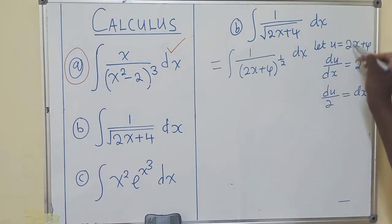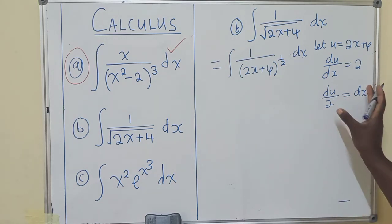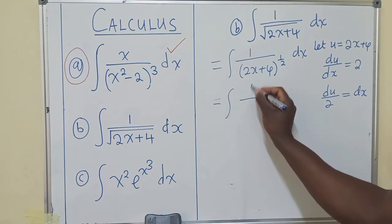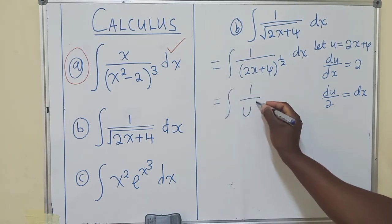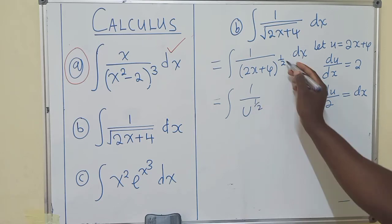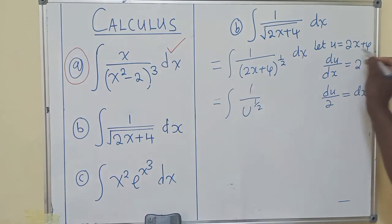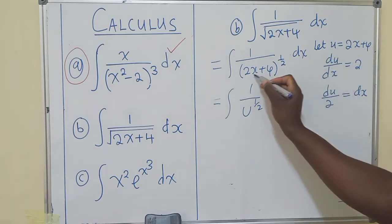du/dx is just differentiating this one with respect to x. So after reaching this point, we substitute back. We shall have the integral of 1 over u to the power 1/2. And the u is coming from here, because we know that this is equal to u, which is right here.